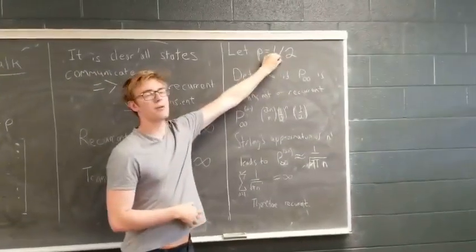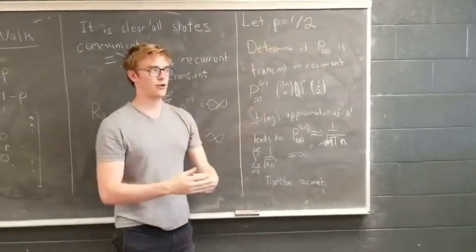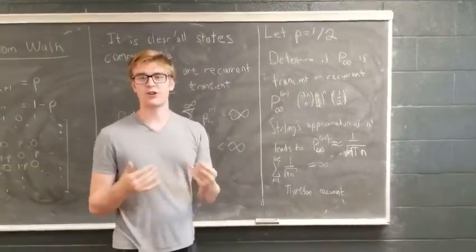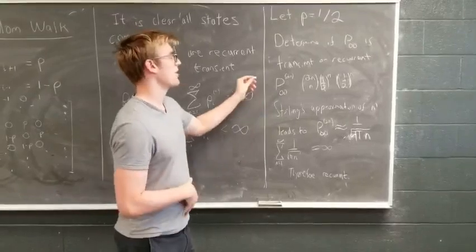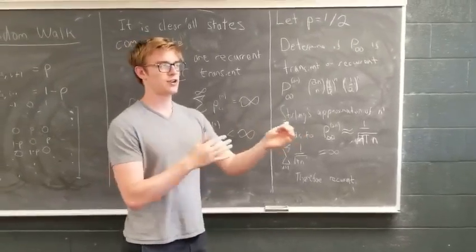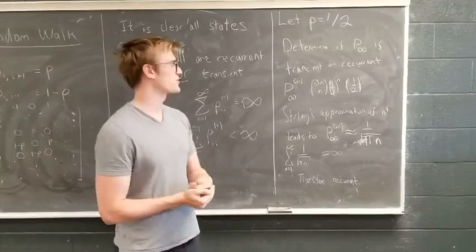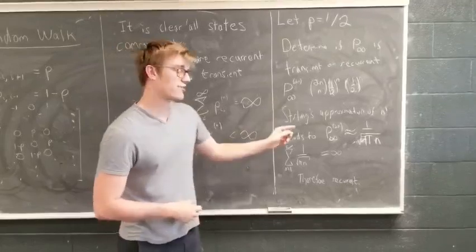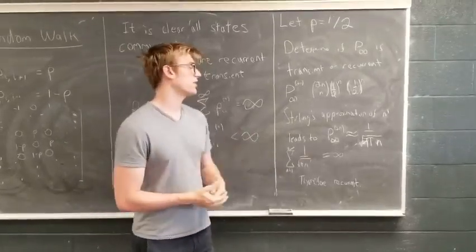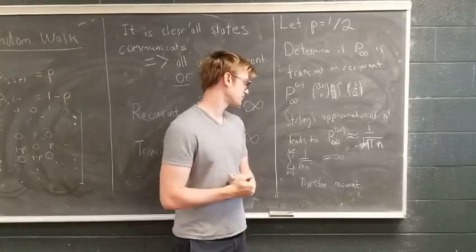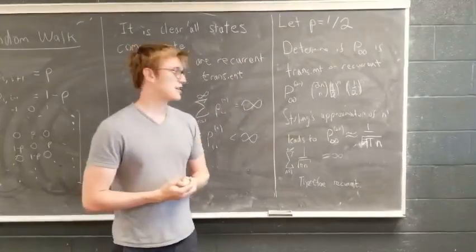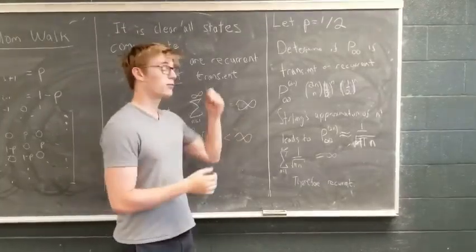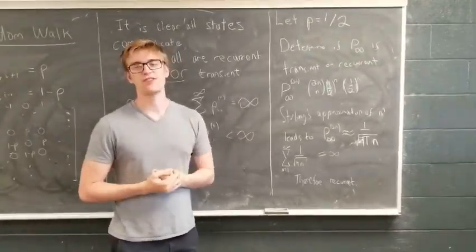We're saying that the probability of going up a state or going below a state is one half. To determine if this particle will return to its starting state, we can show that it returns in two steps via a binomial distribution. By using Stirling's approximation of n factorial, we can simplify this probability to 1 over the square root of pi n. We can see that this summation actually goes to infinity. Therefore it's recurrent, and a random particle taking a random walk will return to its starting position an infinite number of times.